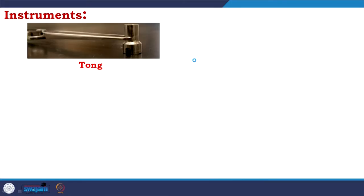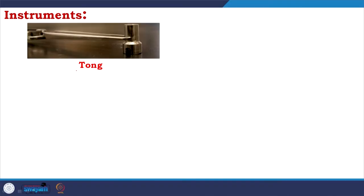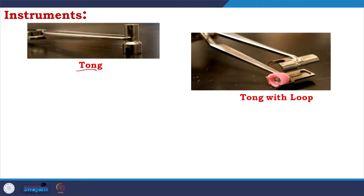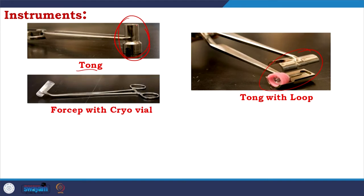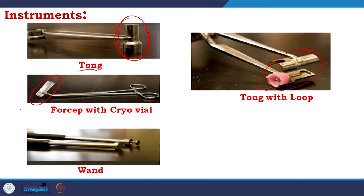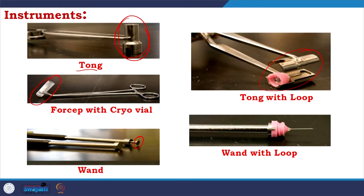Before telling what's next, I am introducing some instruments. This is the tong — I am showing you how the tong works. You hold the loop with the tong; the tong has a loop holder. Then you have a forcep which could hold the cryovial. Then you have a wand — the wand has an iron base, and the loop's base has a magnet. So the wand holds the base and in that way holds the loop.